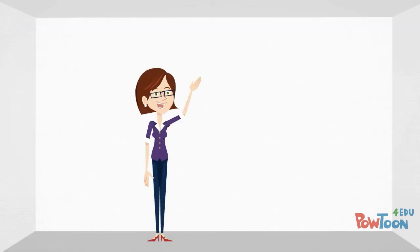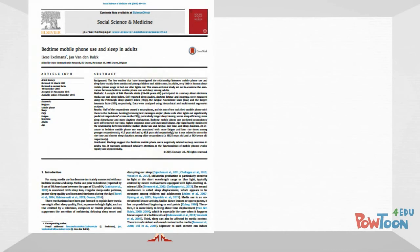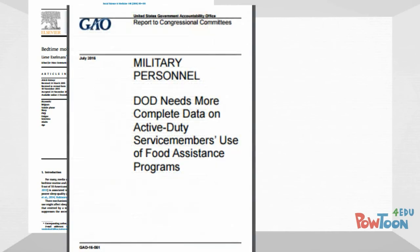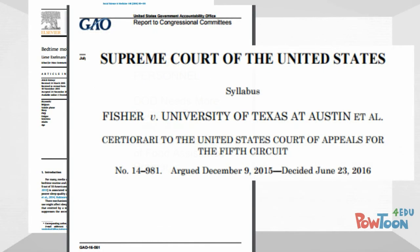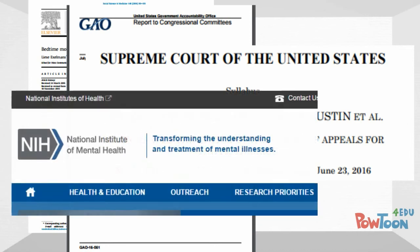Some of the most common primary sources that you will encounter as a journalist include original research articles published in academic journals, government reports, official records and legal documents, and information taken directly from an organizational website, such as the National Institute of Mental Health.